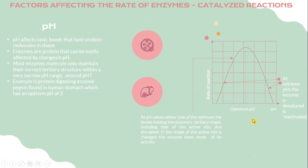This graph shows the rate of reaction versus pH. On either side of the optimum pH value, the bonds holding the enzyme's structure and shape — including that of the active site — are disrupted. If the shape of the active site is changed, the enzyme loses some of its activity. At extreme pH values, the enzyme is denatured and deactivated.